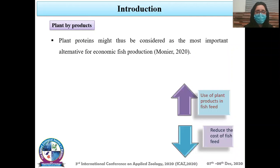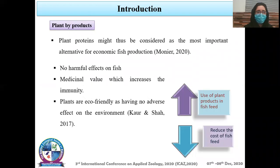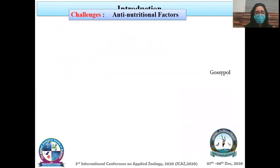Plant protein might thus be considered as the most important alternative for economic fish production. Having no harmful effect, medicinal value, eco-friendly, and having no adverse effect on the environment, the use of plant products in fish feed can reduce the cost of fish feed.